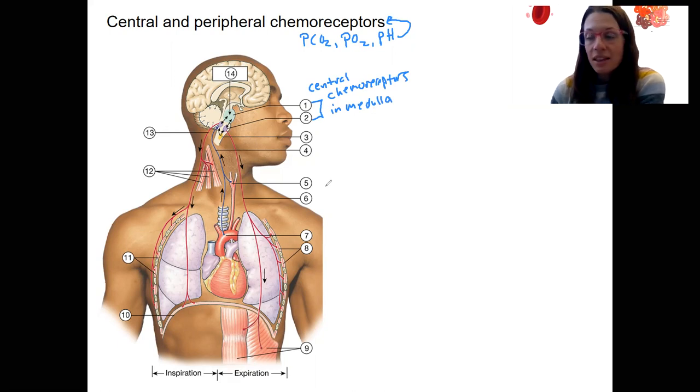Central means in the brain. There are also peripheral chemoreceptors in the aortic arch and the carotid body, peripheral chemoreceptors. So in the periphery, there's going to be overlap of what these respond to.